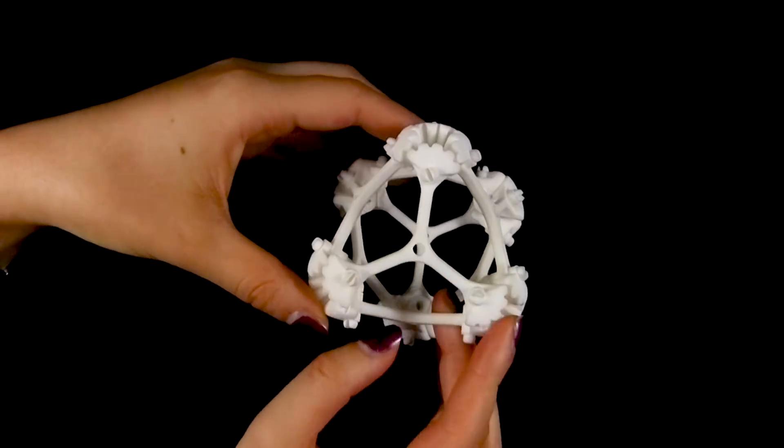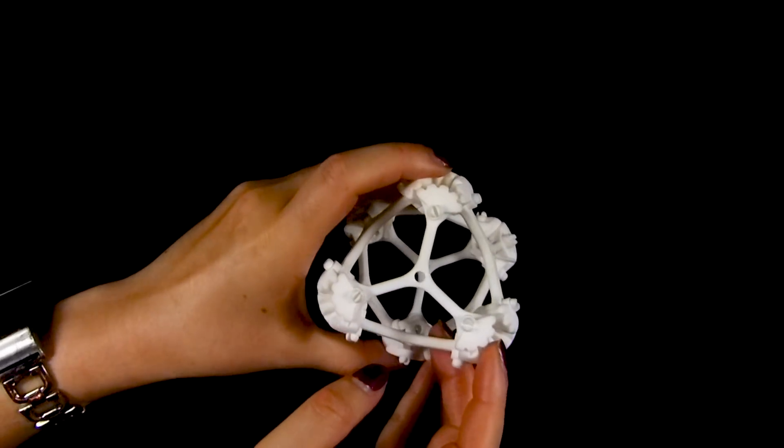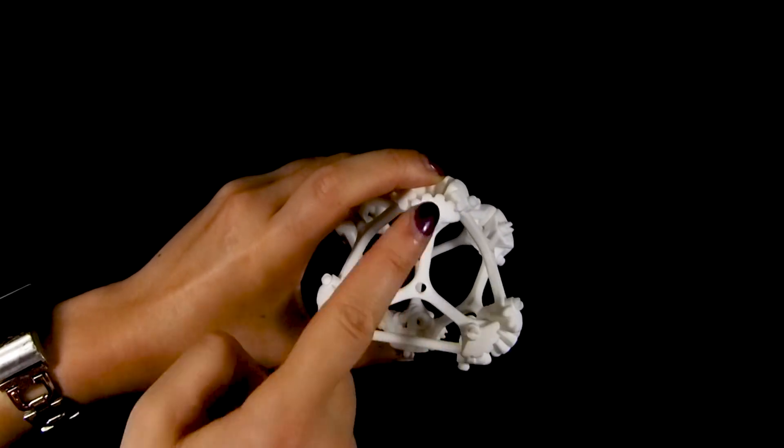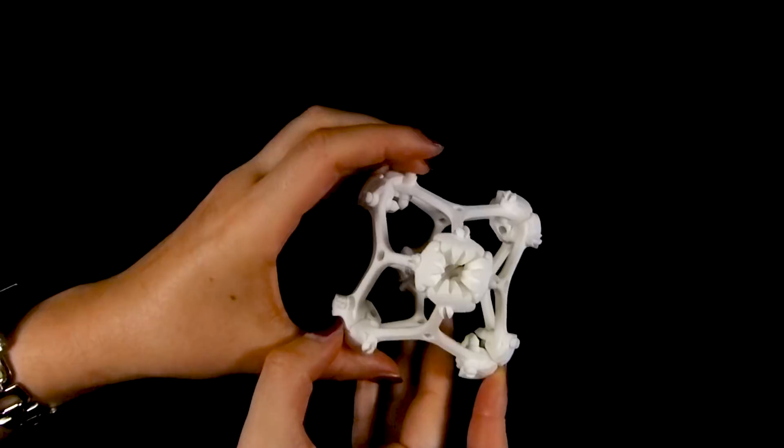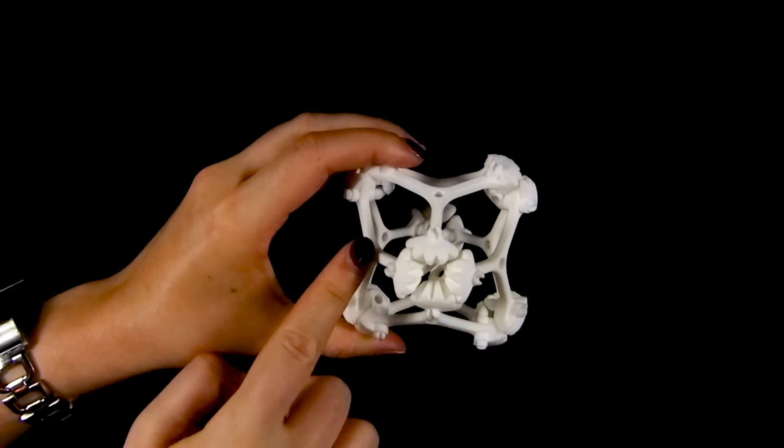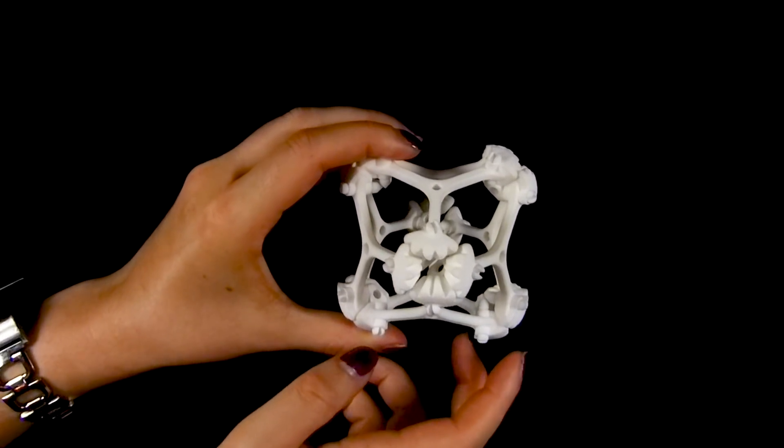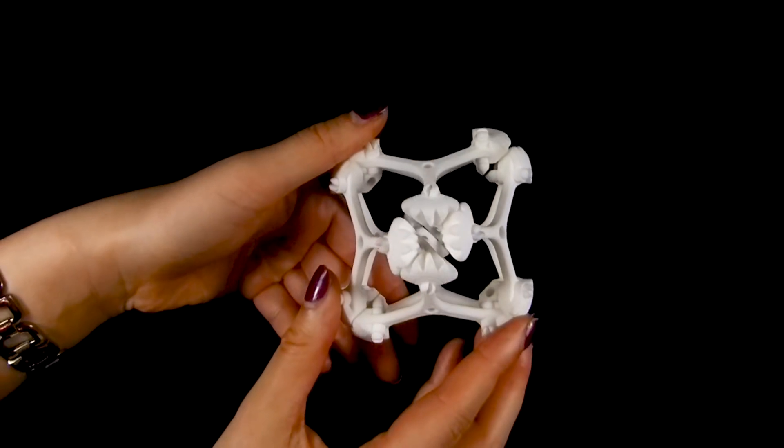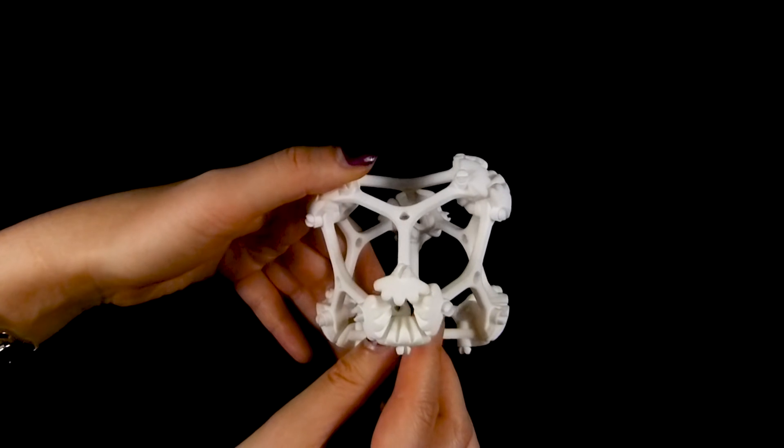So where is the first octahedron? If I hold it this way, you can see that there's a triangle formed by this Y-shaped piece here. And if I rotate it onto this vertex, you can see there are four triangles around this vertex. And if I flip it over, there are four more triangles around here. So this is our octahedron.